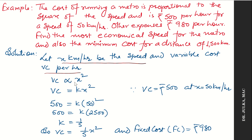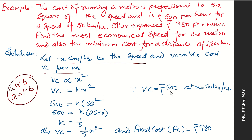The variable cost (running cost) is proportional to the square of the speed, so VC ∝ X². Remember that when A is proportional to B, this implies A = K × B. So variable cost = K × X². Since variable cost is 500 when X = 50 km/h, substituting gives K = 1/5. Therefore, variable cost = (1/5)X².